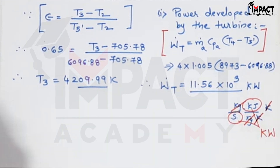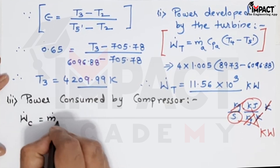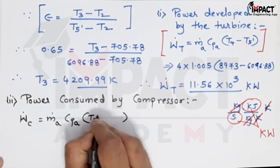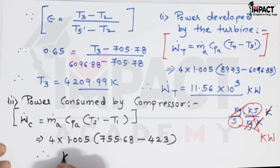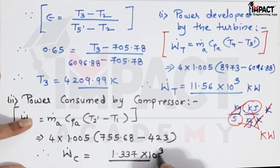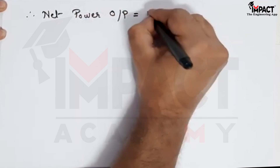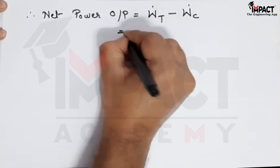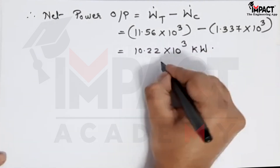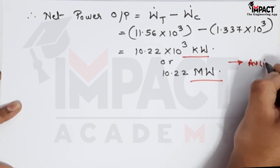Power consumed by the compressor is mass flow rate × specific heat of air × (T2 dash minus T1). Calculating this gives compressor power as 1.337 × 10³ kilowatts. Therefore, net power output equals turbine power minus compressor power, which comes out to 10.22 × 10³ kilowatts, or 10.22 megawatts.